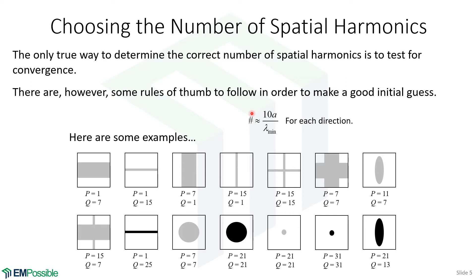As a rule of thumb, you'll probably want around 9 to 11 spatial harmonics per wavelength of device size, though that can vary with dielectric contrast and feature size. Here are some examples. For the first unit cell at the upper left: it's completely uniform in the x direction, so you only need one spatial harmonic there. In the vertical direction there's contrast, but it's a wide bar with low index contrast, so maybe seven harmonics. That's just a first guess.